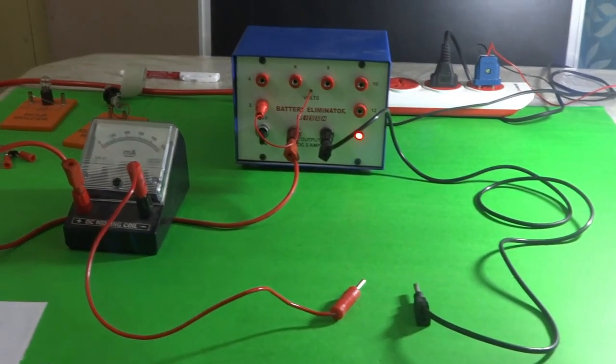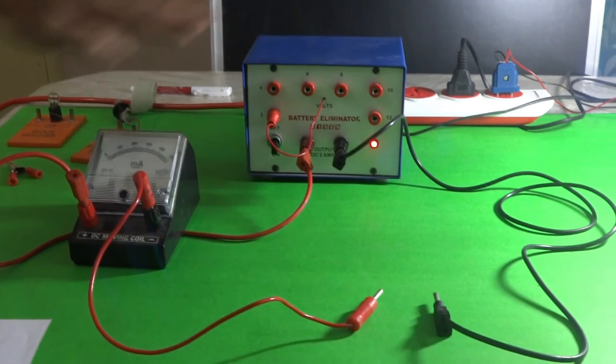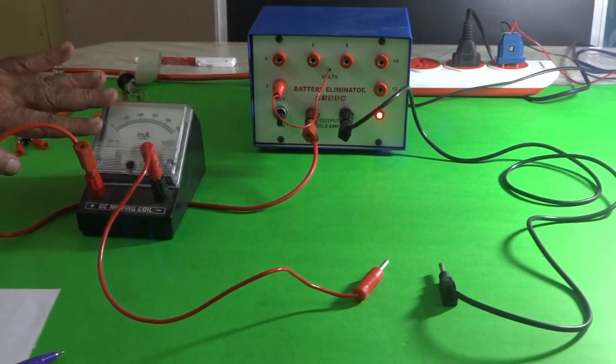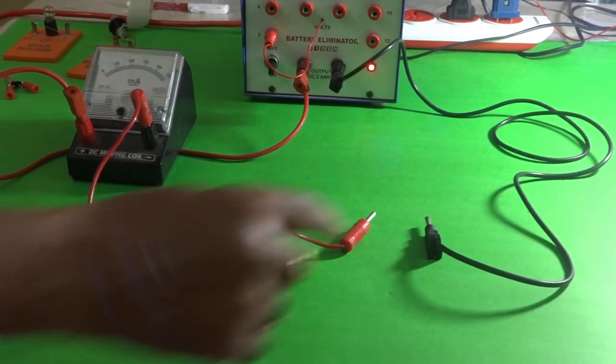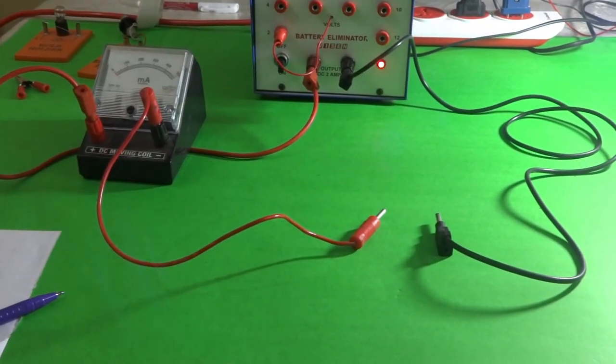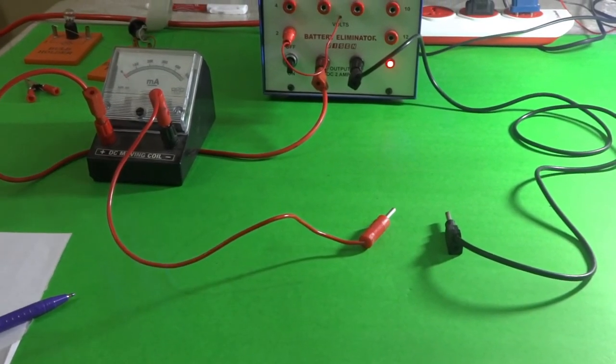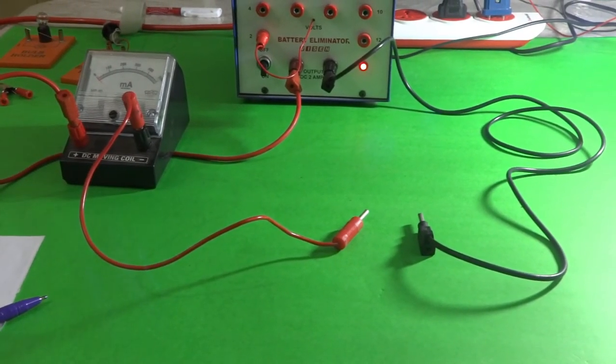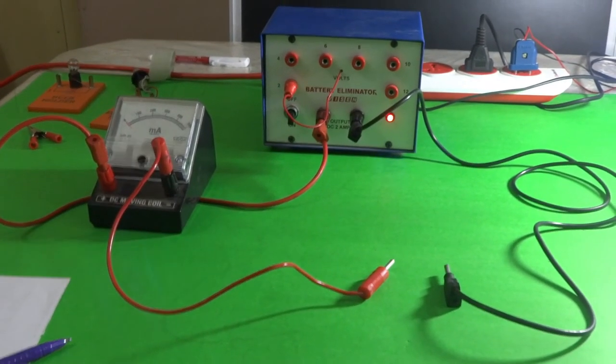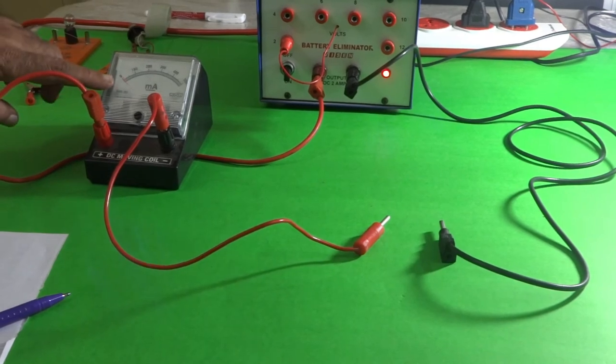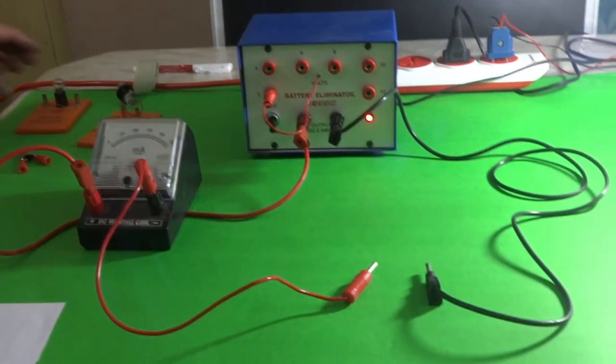So in this activity we have taken one battery eliminator to note down the current, one milliammeter and two connecting wires, and we have given a gap here. In this gap now we are going to connect two different kinds of bulbs and one specific resistance wire. So now we will see what are the corresponding readings that are obtained in the milliammeter.